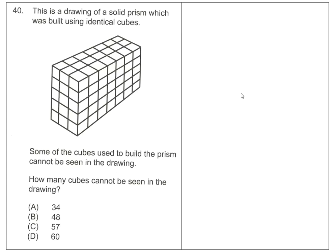Okay, hi. Here's another request to help with a math problem from someone in the Facebook group. So here's the problem. This is a drawing of a solid prism which was built using identical cubes. And there you have the drawing. Some of the cubes used to build the prism cannot be seen in the drawing. How many cubes cannot be seen in the drawing? And here's your multiple choice answers.